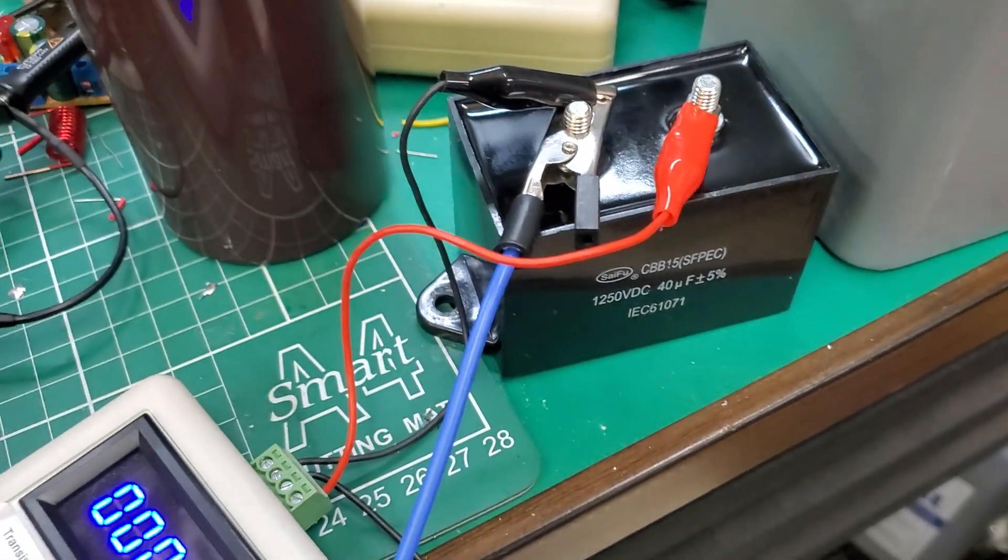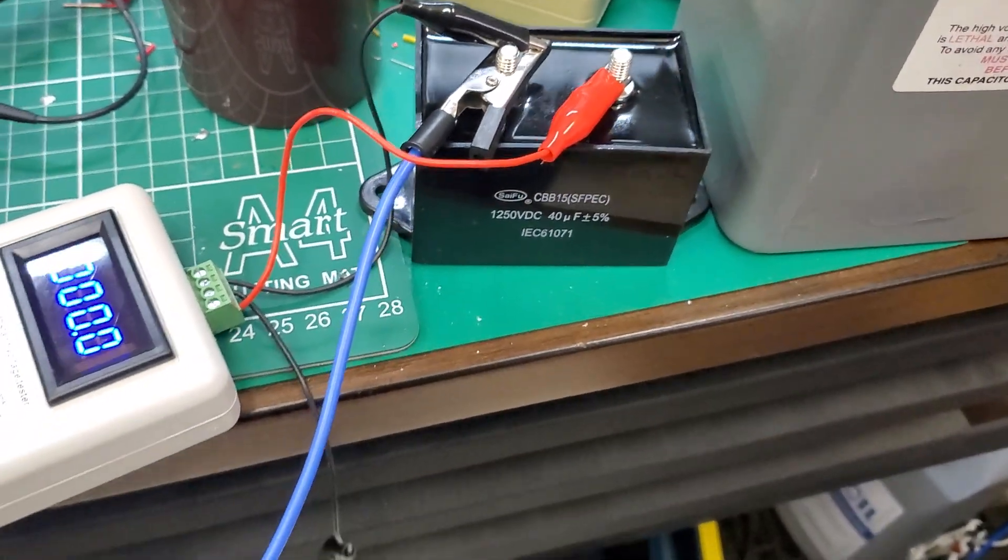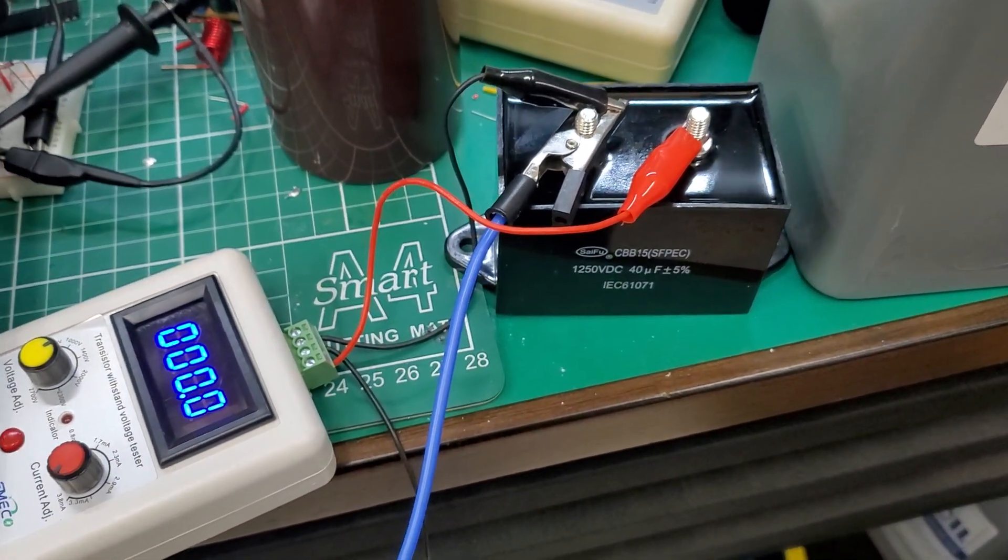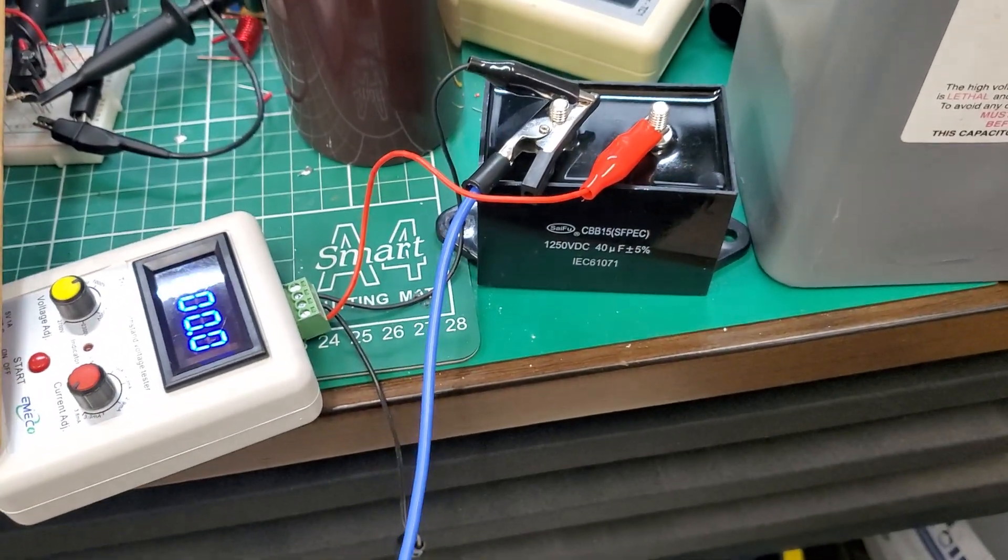So this capacitor here, which I'll just demonstrate the unit with, is a welder capacitor. It's 40 microfarads at 1.2 kilovolts, so not a particularly big capacitor.